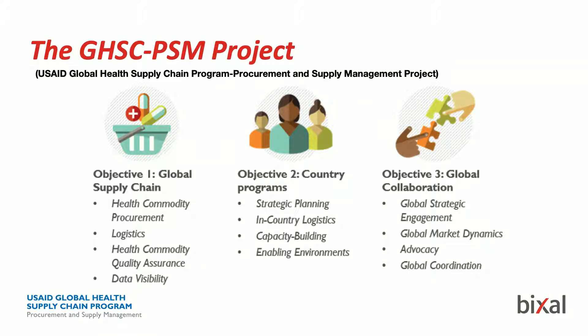Once we have those commodities in-country, we help ministries of health and in-country partners actually get those commodities to the people that need them the most. A lot of times that means rural populations who might not be able to access things as simple as malaria prevention in areas with high risk for malaria, or HIV patients being able to get reliable supplies of antiretrovirals. The third piece is global collaboration — none of this work is done on our own; we work with global partners and other donors to make sure everything is done as efficiently and effectively as possible.